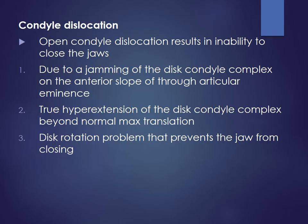Condyle dislocation is a problem with the condylar head itself — the bone. Open condyle dislocation results in an inability to close the jaw, as the condyle dislocates from its joint position. This occurs due to jamming of the disc-condyle complex on the anterior slope of the articular eminence, hyperextension of the disc-condyle complex beyond normal maximum translation, or disc rotation problems that prevent the jaw from closing back.